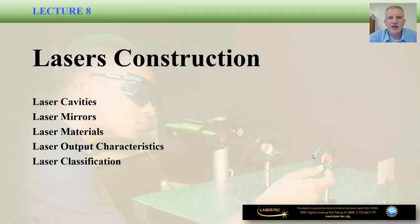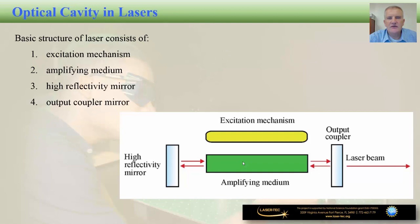Hello and welcome to lecture number 8 in our series of geometrical and physical optics lectures. The title of this lecture is laser construction. We are continuing our study of lasers from the previous lecture, covering laser cavities, laser mirrors, the materials used to construct lasers, some laser output characteristics, and how to classify lasers. In the previous lecture we analyzed laser operation; here we look at the most important piece parts of a laser that enable that operation.